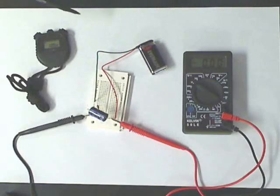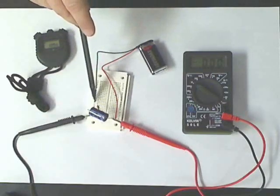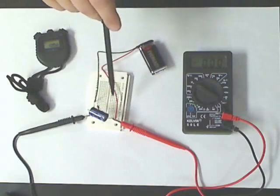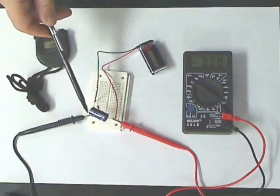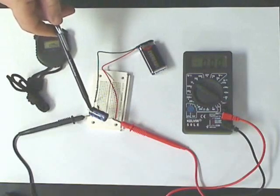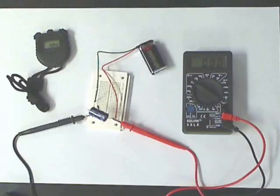Once the capacitor is fully charged, they disconnect the battery, close the circuit, and discharge the capacitor through the resistor. They measure the voltage every 20 seconds across the capacitor until it is completely empty.